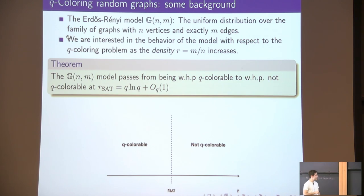One thing we know is that there exists this satisfiability threshold, this density around q log q, above which with high probability random graphs are not q-colorable, and below which these graphs are q-colorable with high probability. So there is this phase transition here.